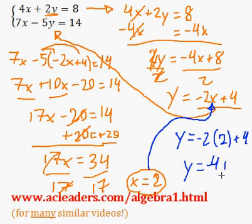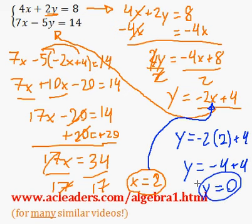Sorry, let me just fix that. Negative 2 times 2 is negative 4, plus 4, negative 4 plus 4 is 0. So x is 2, y is 0, and that's it.